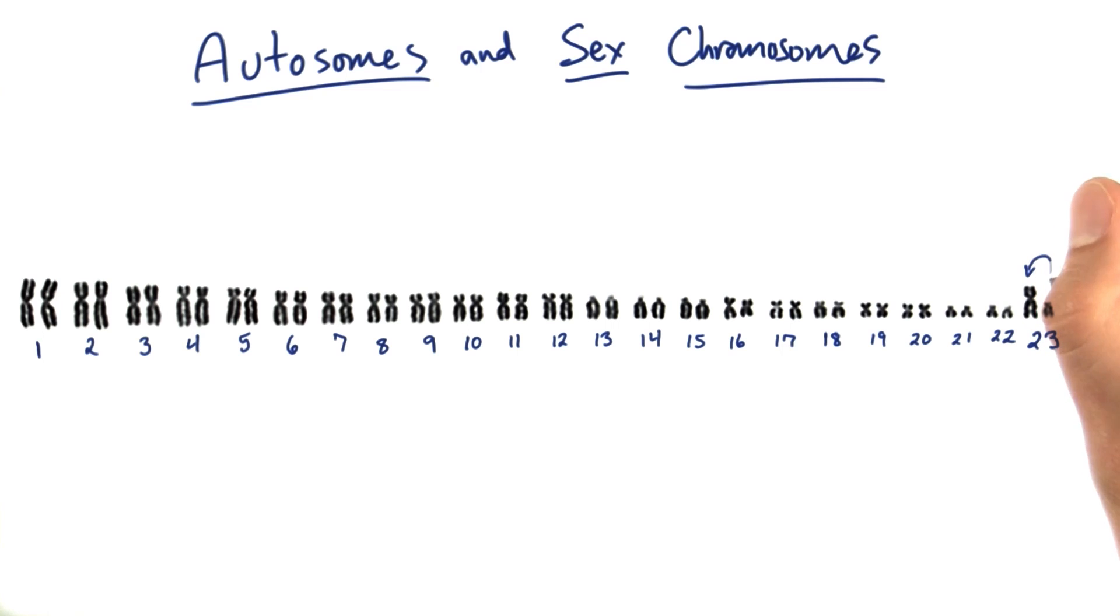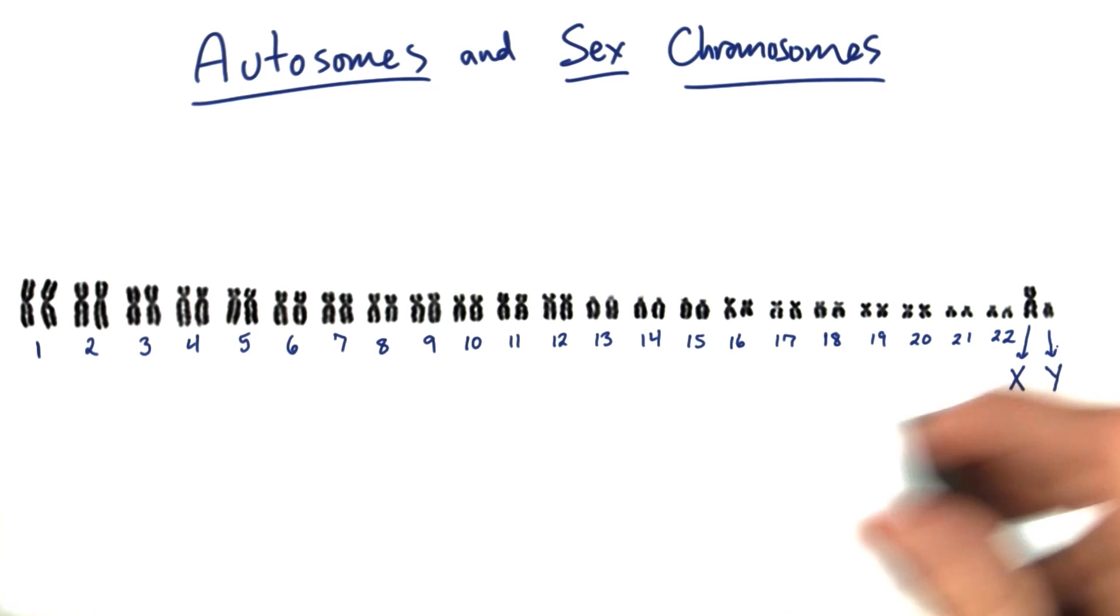They don't match in size in the pair the way all the other chromosomes do. In fact, they're so different and they're important for a very different reason that they're not numbered like the other chromosomes. It's the 23rd pair,